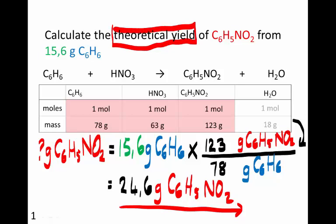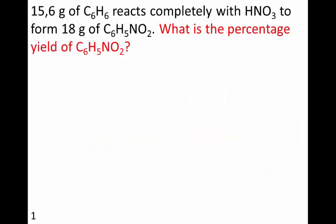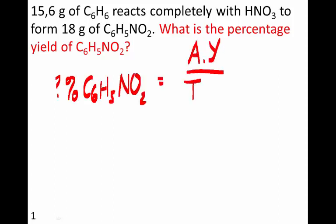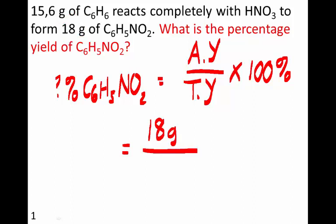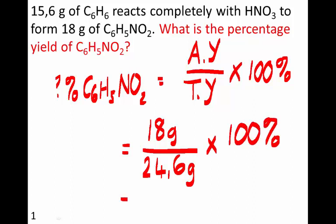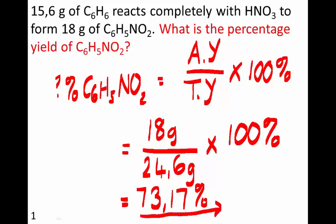We've just answered our sub-question; now we answer the real question: what is the percentage yield? The formula is actual yield divided by theoretical yield times 100%. The actual yield given in the question is 18 grams; the theoretical yield we calculated is 24.6 grams. So 18 divided by 24.6, multiplied by 100, gives 73.17%. That means 73% of what you would have predicted should form was actually formed.